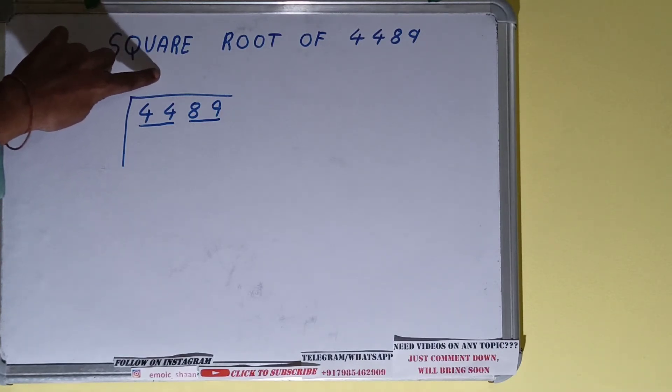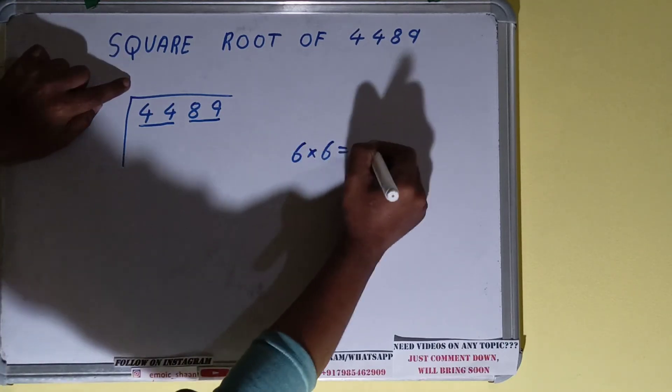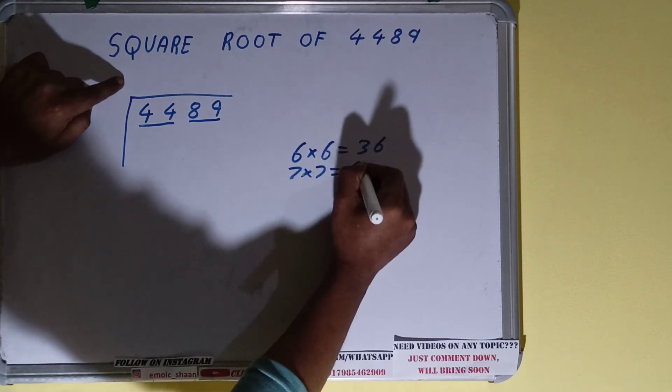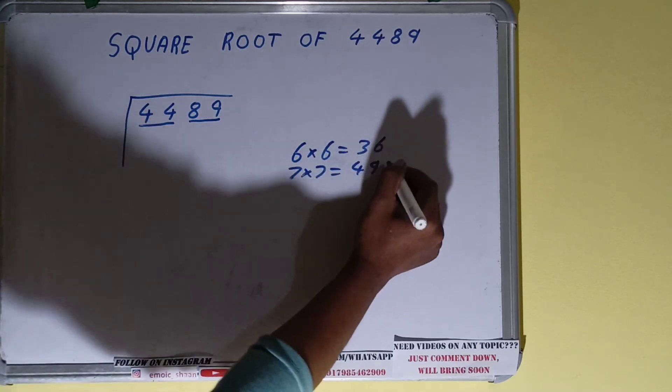The next thing we need to do is whatever divisor we take here, we have to take it as a quotient also. So if we take 6 here, we have to take 6 here as well. It will be 36. If we take 7 here, we have to take 7 here as well, it will be 49. Now we cannot go with 7 because 49 is greater than 44.